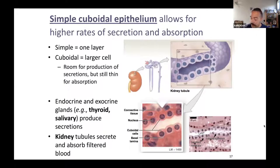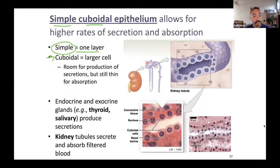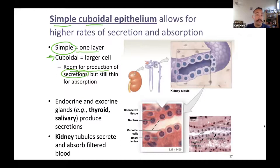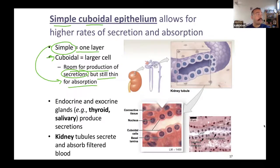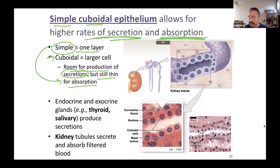Next type: simple cuboidal. Simple means one layer; cuboidal means cube-shaped — it's a larger cell. A larger cell has more organelles, more room for production of stuff. You can secrete proteins and other things by exocytosis or other means. There's more machinery, more organelles for production. At the same time, by being simple, you can still absorb stuff. Simple squamous is most efficient for absorption, but simple cuboidal is still fine for absorption while also allowing high rates of secretion.